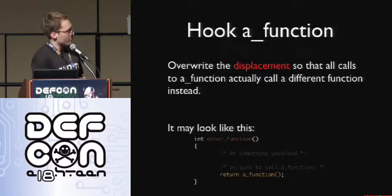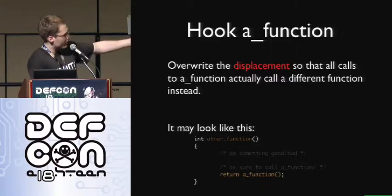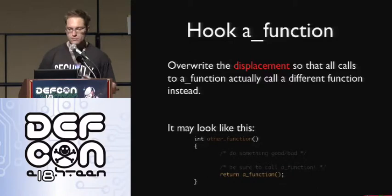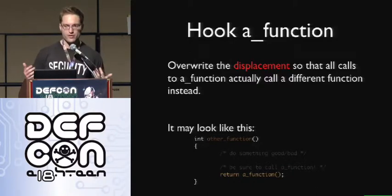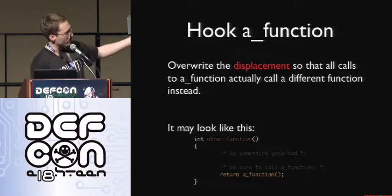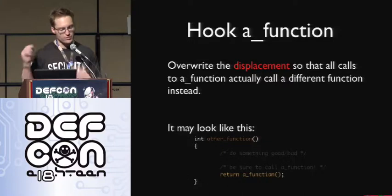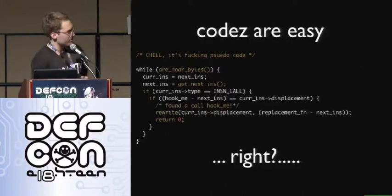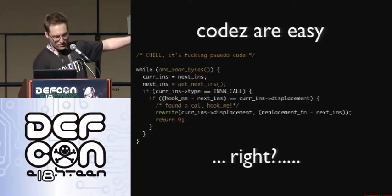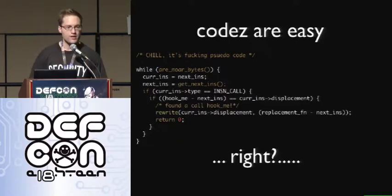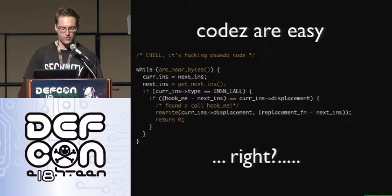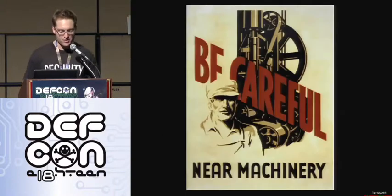So hooking a function is actually pretty easy — you can just go around overwriting all the displacements and replace them to call your own handler function instead. Your handler function can do whatever you want. In my case, since I'm building a memory profiler, I actually want the Ruby binary to keep working after I'm done overwriting stuff. So I'm going to do my thing and also call the original function so that the Ruby VM can do what it was supposed to do normally. The code for this is easy — you just iterate through looking at each byte. Once you find a call instruction, you do some math and check if the 32-bit displacement matches the function you're trying to hook. And if it does, you just overwrite that to call your handler function instead.